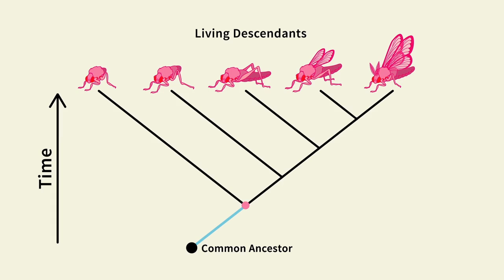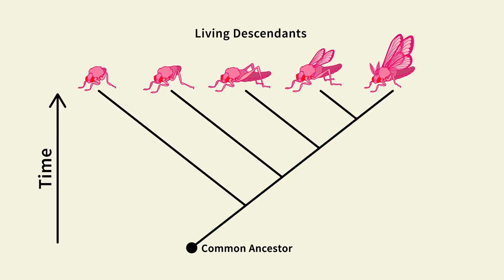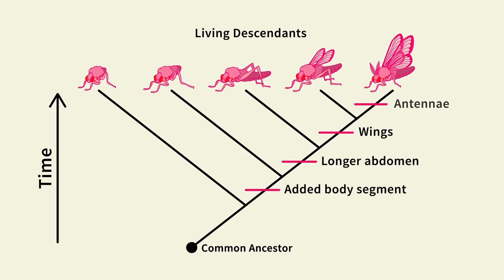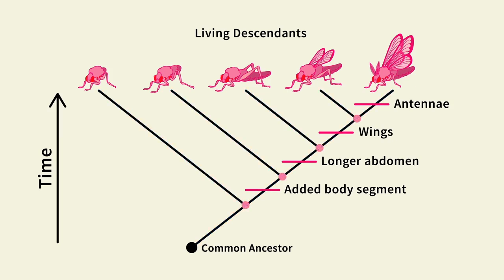Moving forward in time, we reach another branch point. The creatures that connect to the branch on the right have a longer abdomen. This pattern continues — the next trait to come along is wings, followed by antennae. Looking at the branching pattern, we can see the order in which various traits arose. The branch points, or nodes, represent common ancestors — more specifically, the most recent ancestor that is common to all the branches beyond it.